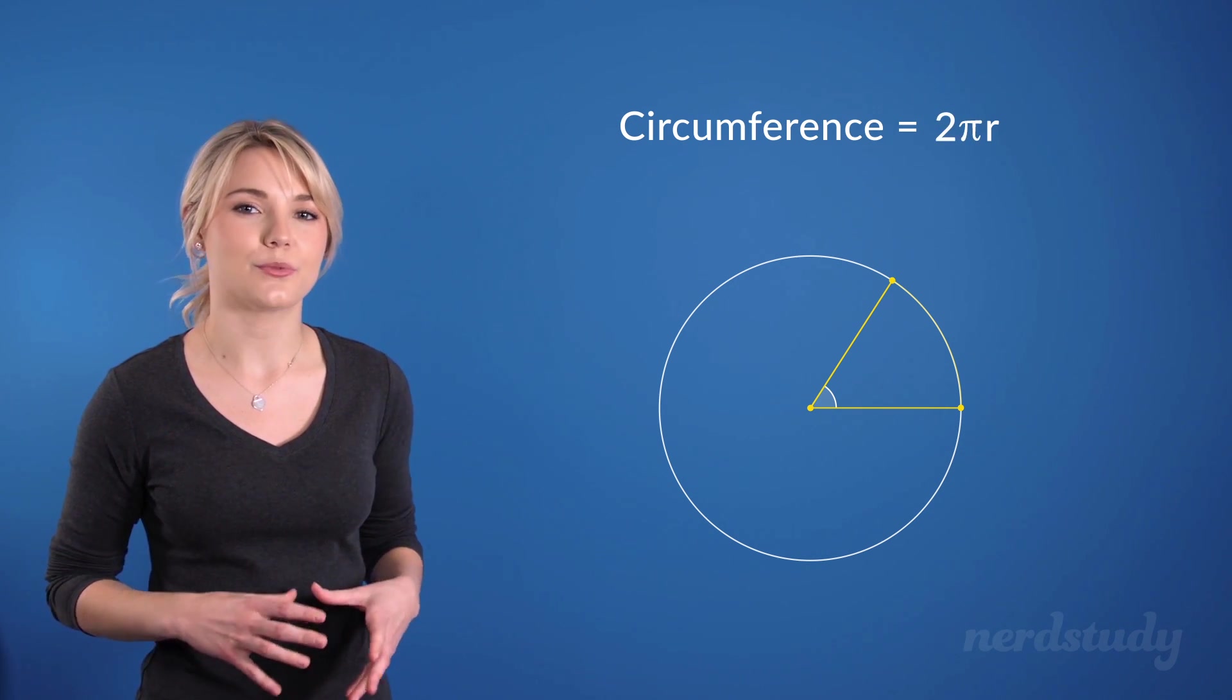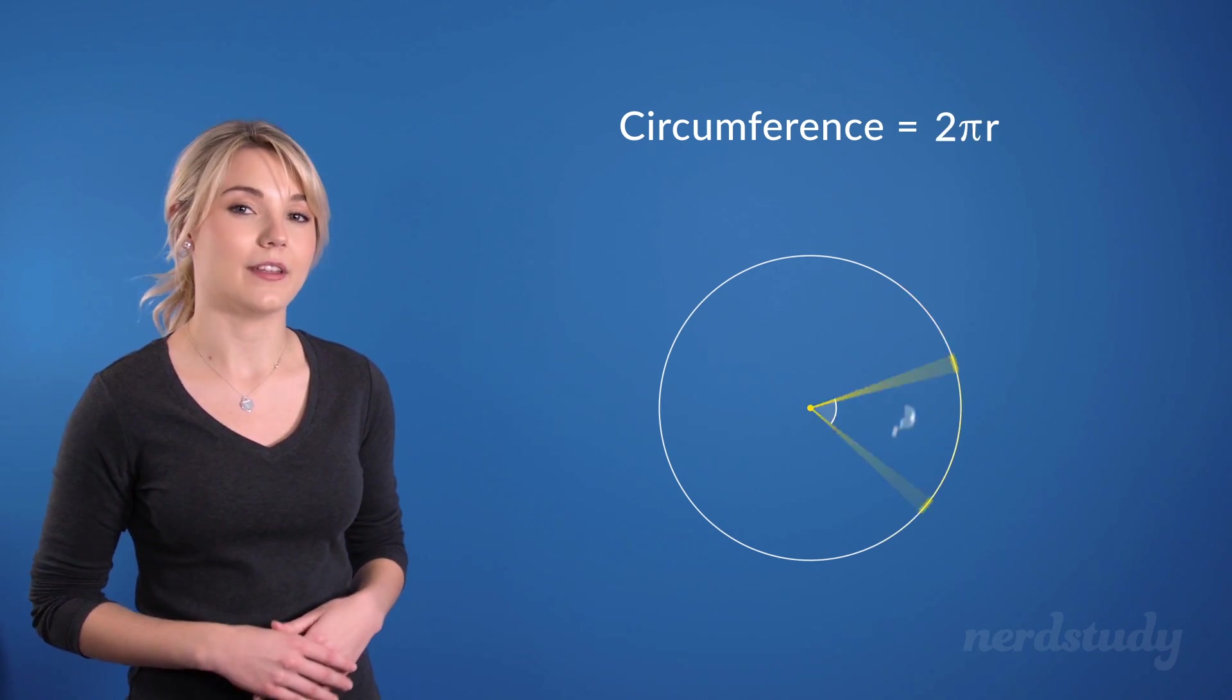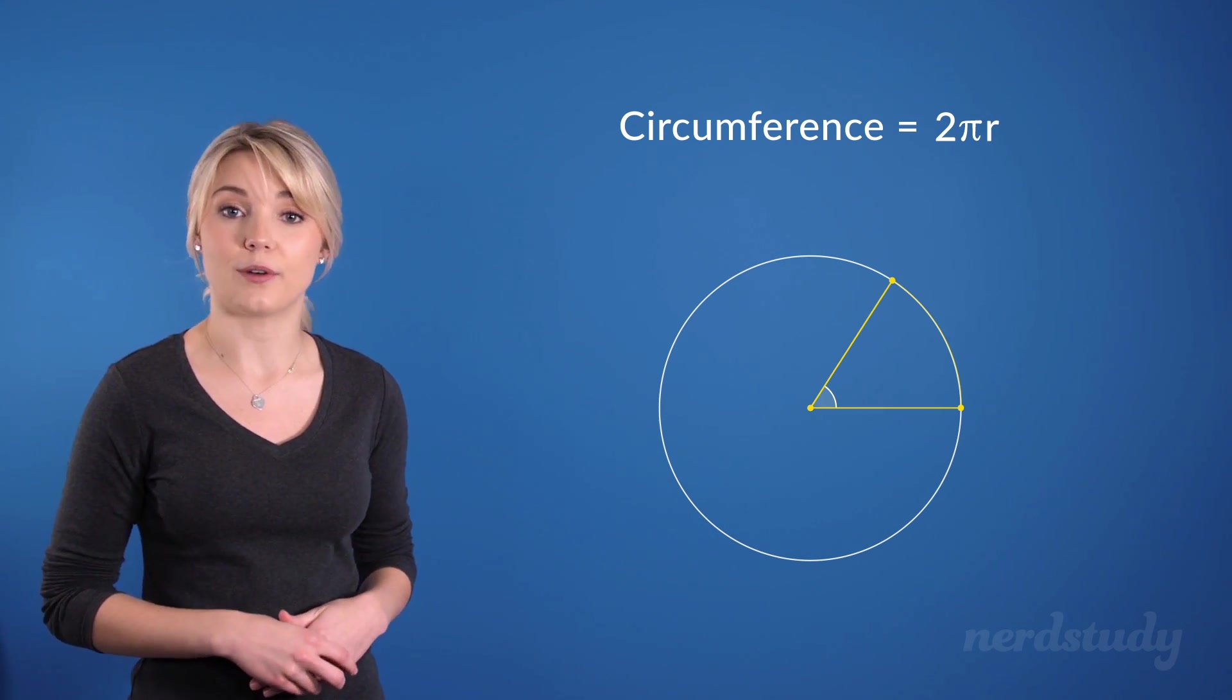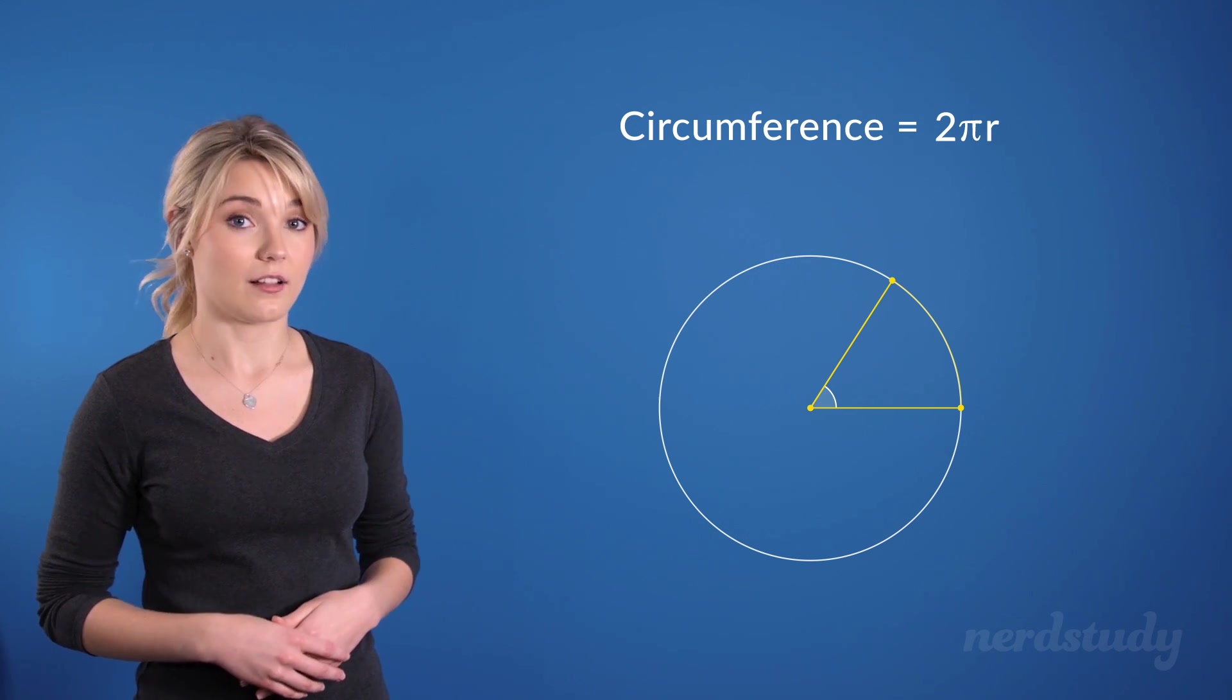Now, how many of these radians would we need to wrap around an entire circle? Well, that would depend entirely on how long a single radian is in terms of its arc length.